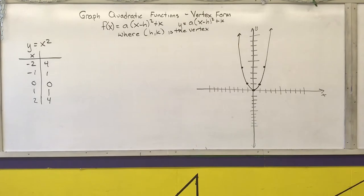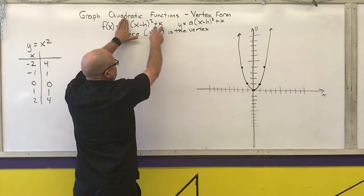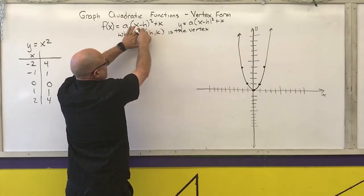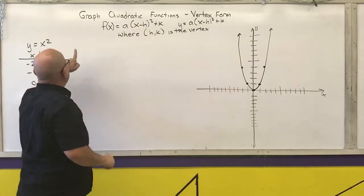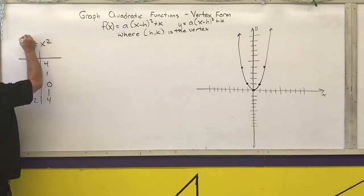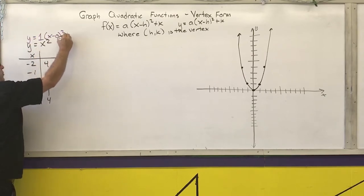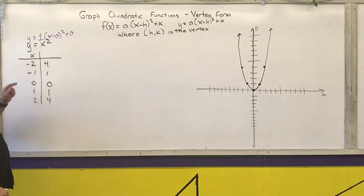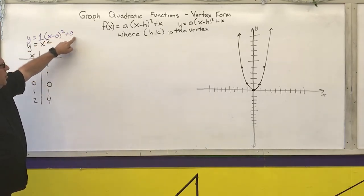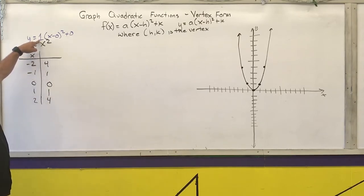The next one I'm going to graph: the a is going to be 1 and the k is going to be 0. I want you to realize this is also in vertex form — I can write this as y equals 1 times x minus 0 squared plus 0, where (0,0) is my vertex and 1 is the scaling factor.